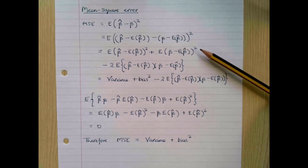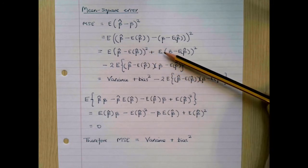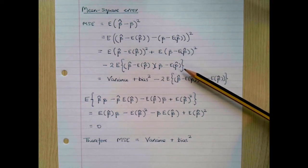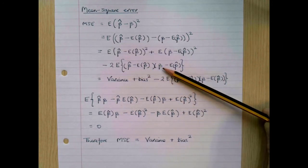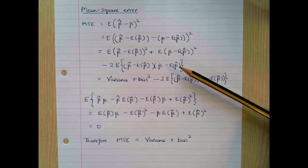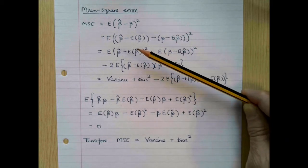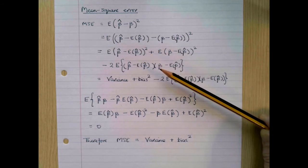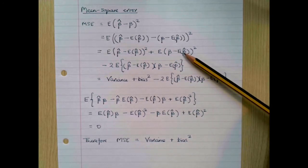Now let's expand that expression. We can write this as the expected value of β̂ minus its expected value, squared — which is the variance — plus the expected value of β minus the expected value of β̂, squared — the squared bias — minus 2 times the cross product term, which is the expected value of β̂ minus its expected value multiplied by β minus its expected value.